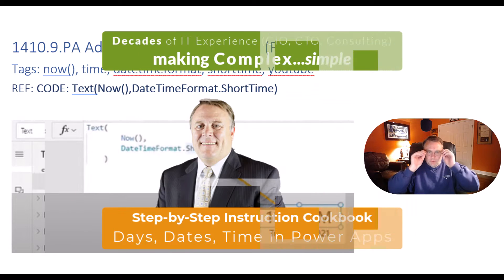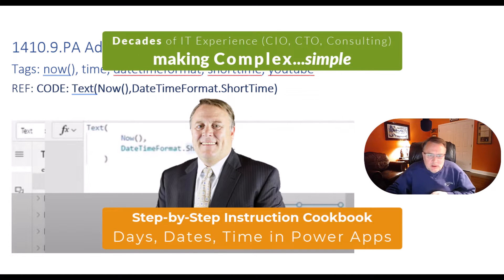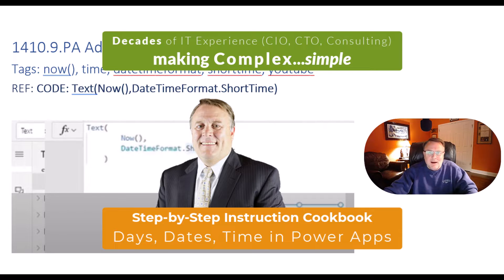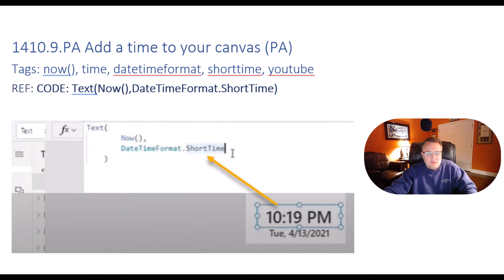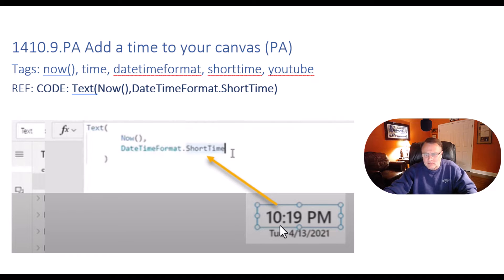The first thing we're going to talk about right here on the screen is the ability to add time to your Canvas. You can see here the code itself right here: Text Now, Date Time, Format, Short Time. And then you can see the result there in the bottom right hand side — the time with the date.